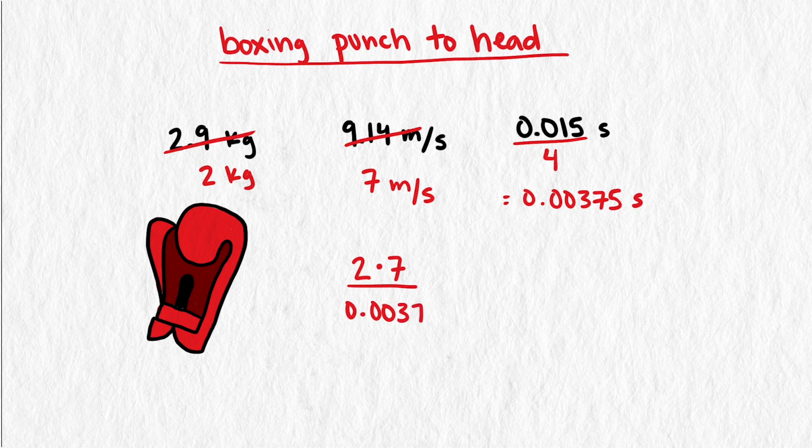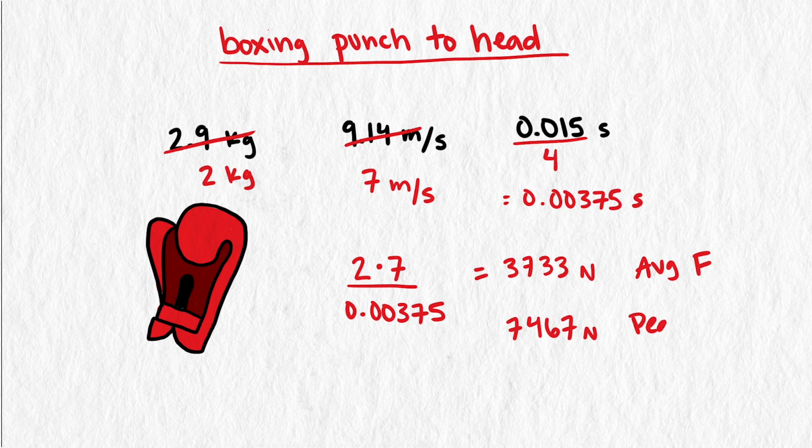This gives us an average impact force of 3,733 newtons, and a peak impact force of 7,467 newtons. Now we have a range to help determine how much force is needed to turn a blunt object into a lethal object.